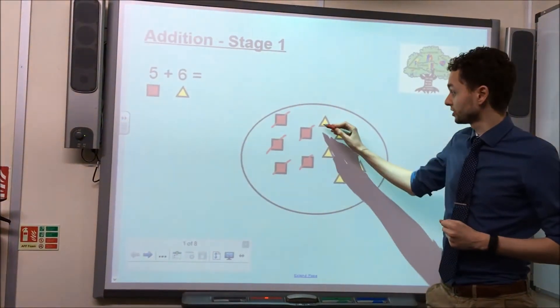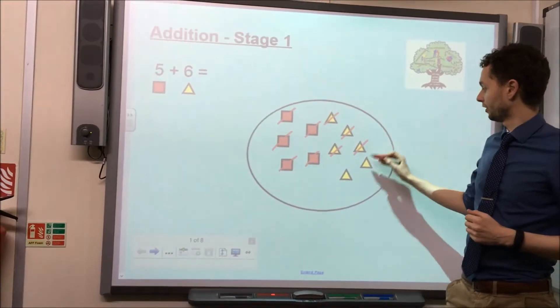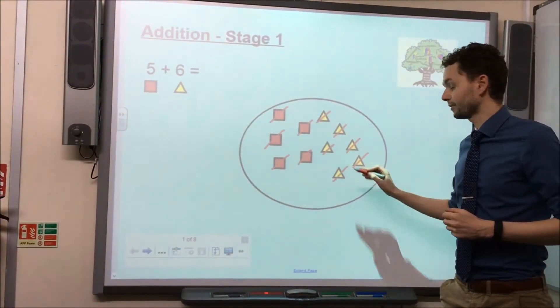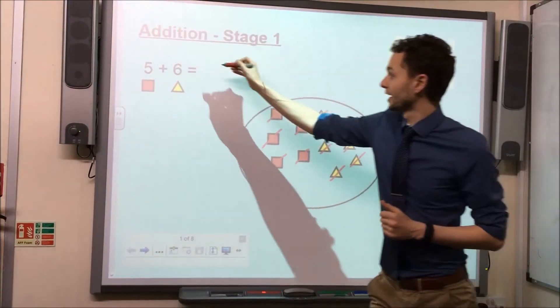Now moving on to the triangles. 6, 7, 8, 9, 10, 11. Which tells us that the answer to 5 add 6 is 11.